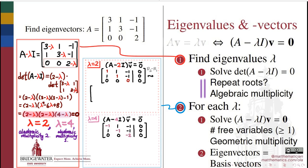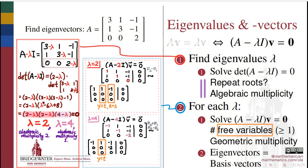For (A − 2I)V = 0, row reduction wipes out the second and third rows of that augmented matrix. For (A − 4I)V = 0, row reduction wipes out the bottom row. We then identify the free variables — those are the columns that do not have pivots. In the case of λ = 2, there are two columns without pivots, so we assign two free variables. For λ = 4, there is one column without a pivot, so we assign one free variable.